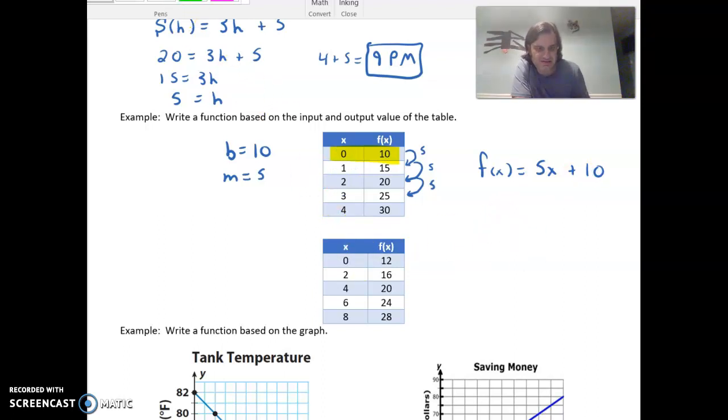The next one, pretty good start. When x is 0, the output is 12. So the starting amount is 12. Now, interesting here, on this side, it's going up by 2. So remember what I did to you with the graph. But this is going up by 2.